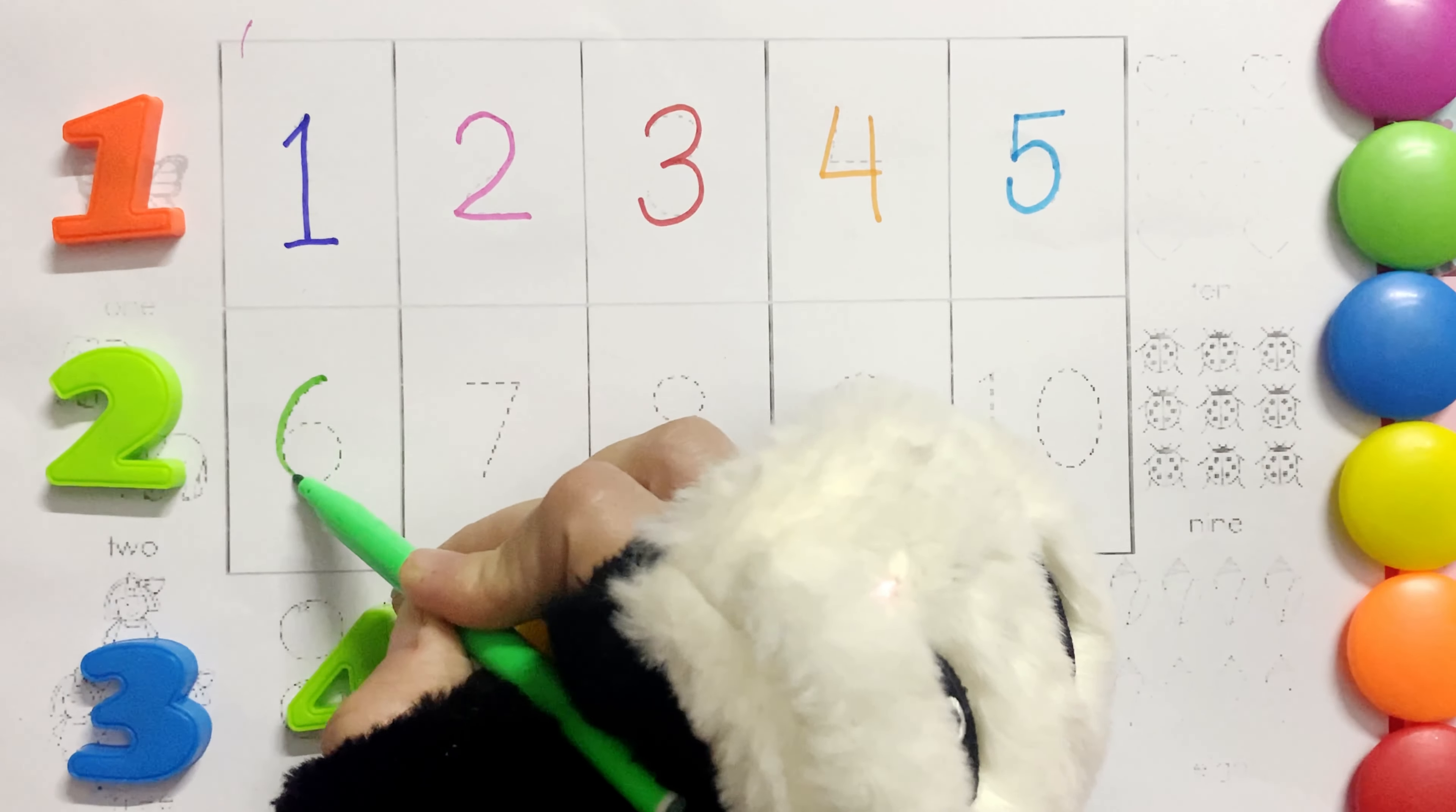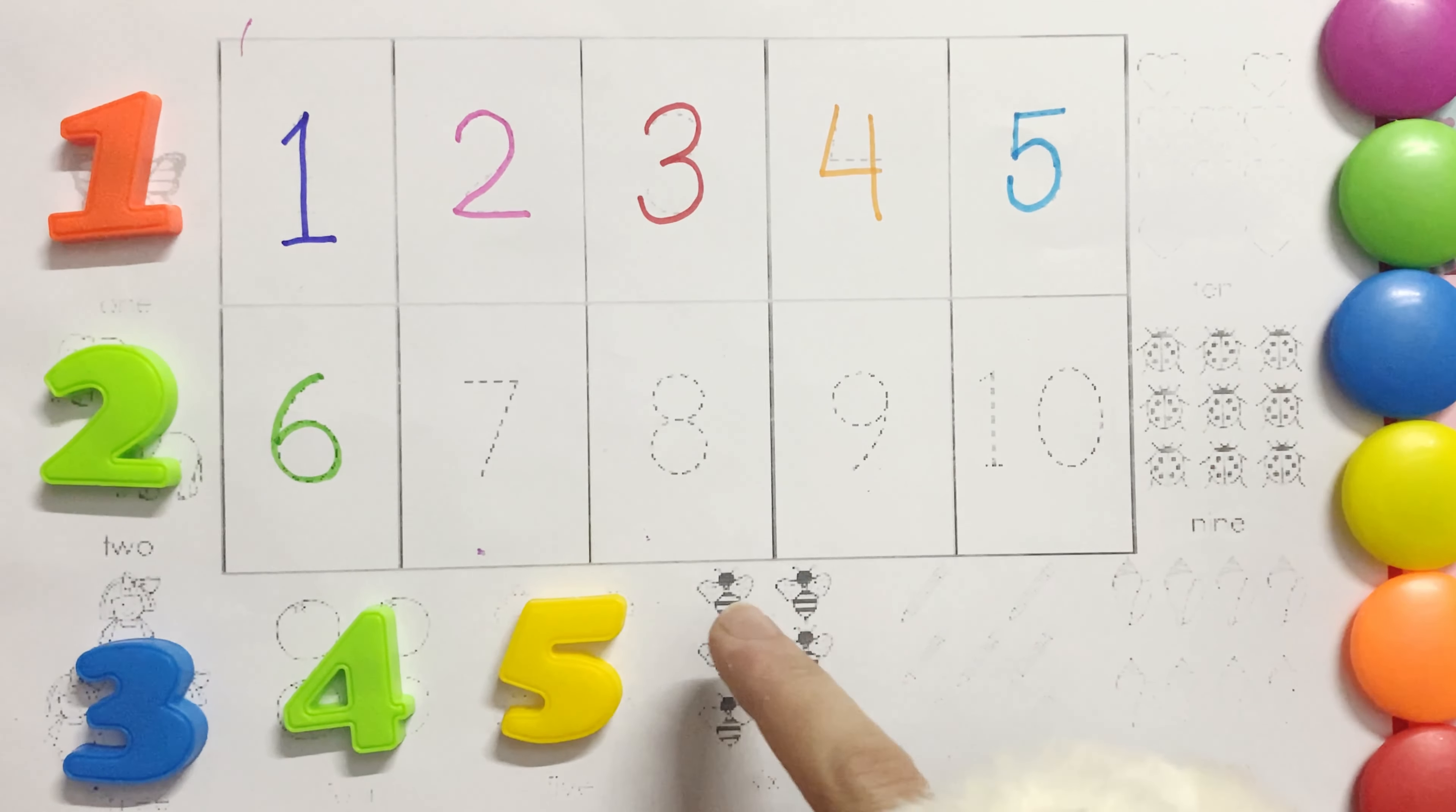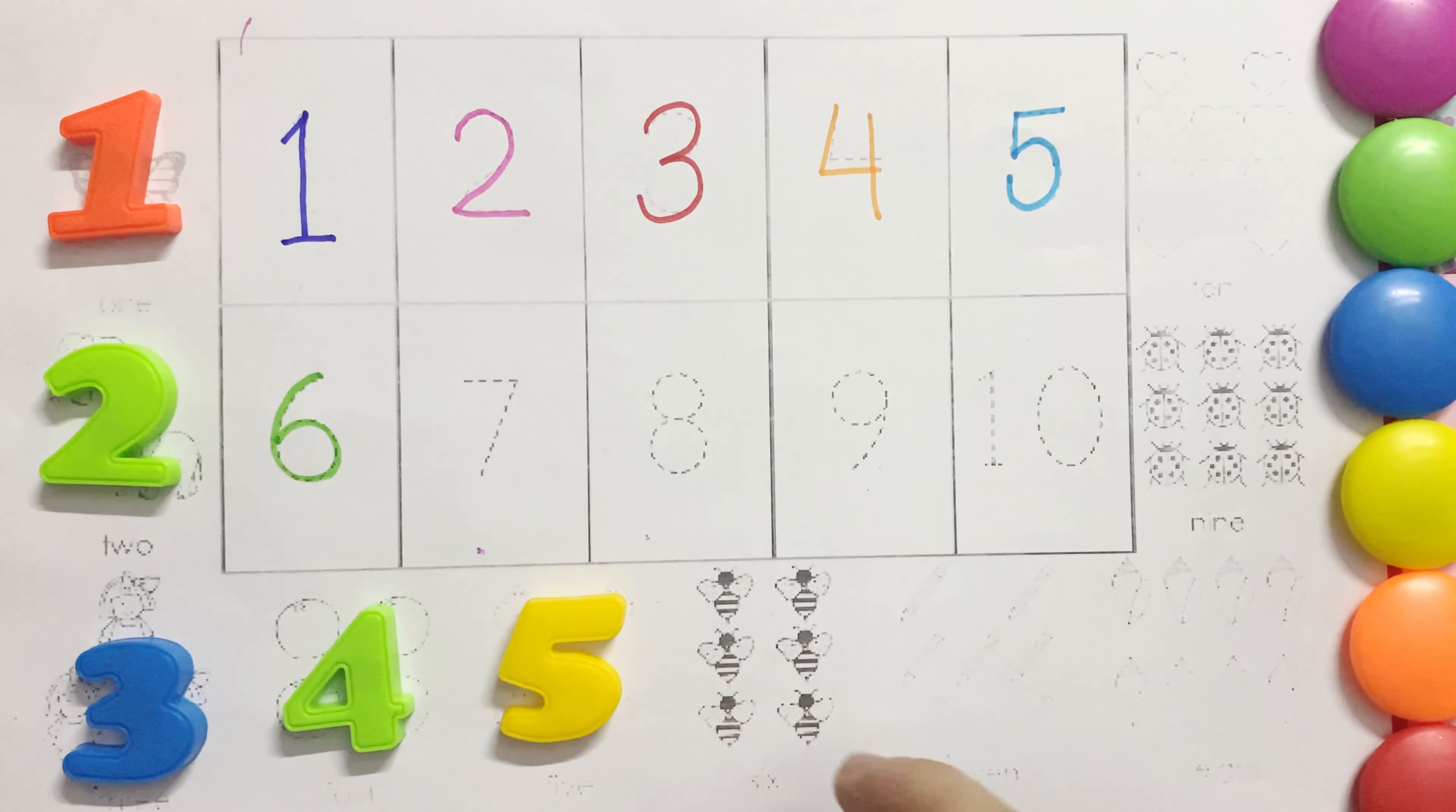Six. Six. Six honeybees. One, two, three, four, five, six.